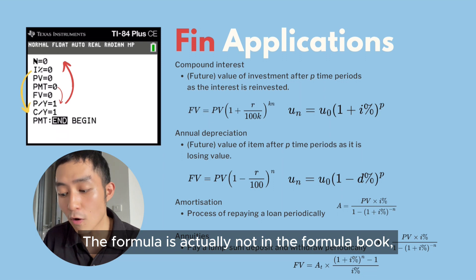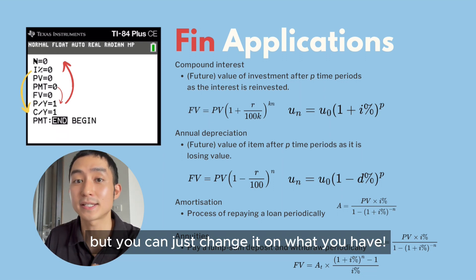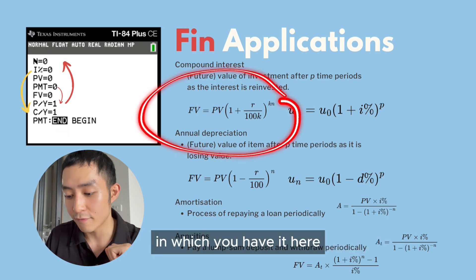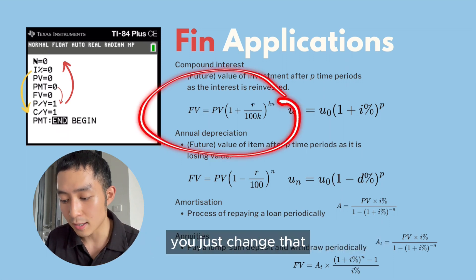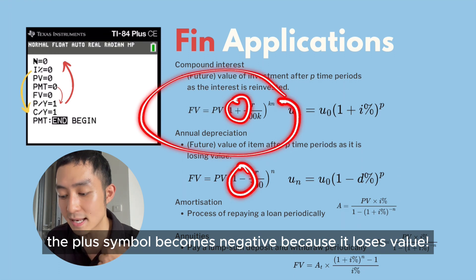Now the formula is actually not in the formula book, but you can just change it on what you have. You just change that the plus symbol becomes negative because it loses value.